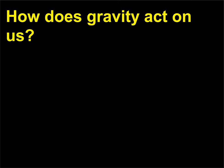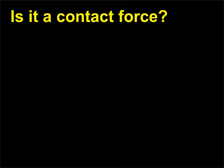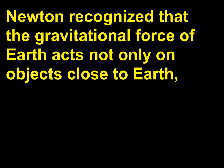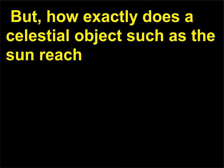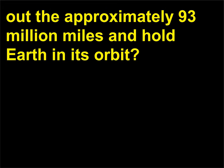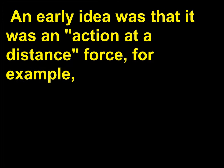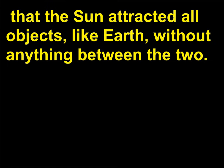How does gravity act on us? Is it a contact force? Newton recognized that the gravitational force of Earth acts not only on objects close to Earth, like the famous apple, but also on objects as far away as the moon. But how exactly does a celestial object such as the sun reach out approximately 93 million miles and hold Earth in its orbit? An early idea was that it was an action-at-a-distance force — for example, that the sun attracted all objects like Earth without anything between the two.